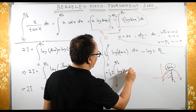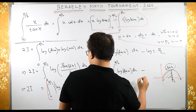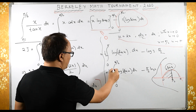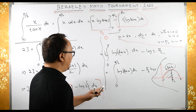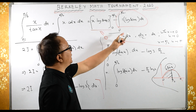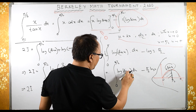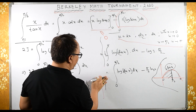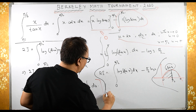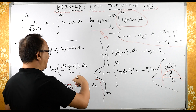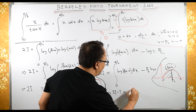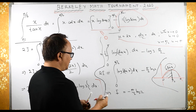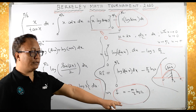So 2I = (1/2)·2·∫₀^{π/2} log(sin u) du − (π/2)·log(2). The 2s cancel, and ∫₀^{π/2} log(sin u) du is just I. So 2I = I − (π/2)·log(2). Therefore 2I − I = −(π/2)·log(2), giving I = −(π/2)·log(2). This is the answer.